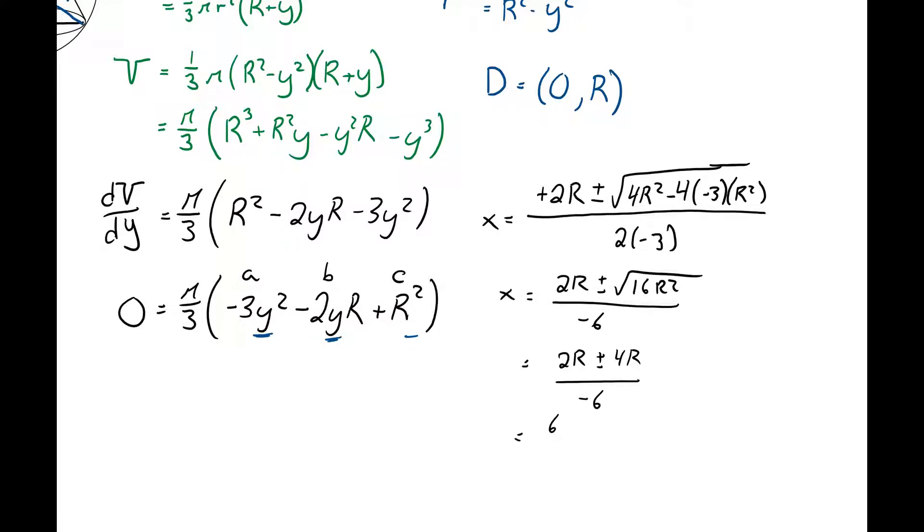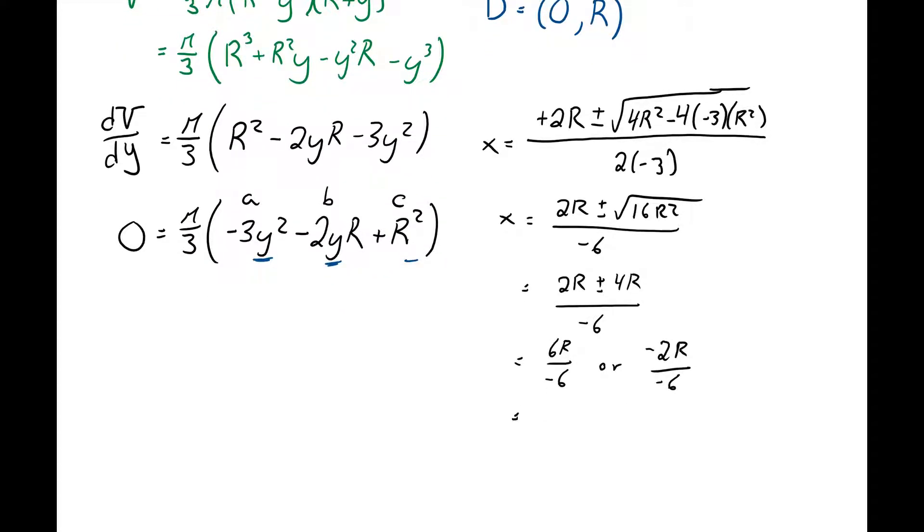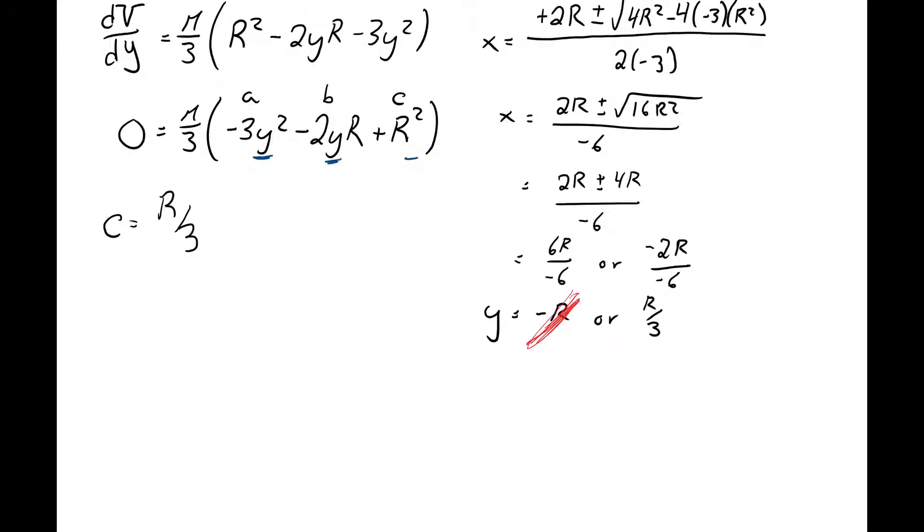So I have 2R plus or minus 4R over negative 6. So on the one hand, I have 6R over negative 6, or 2 minus 4, which is negative 2R over negative 6. Clean this up. I get x equal to, I need no, we're actually in terms of y. So it should be y equals negative R, or R over 3. But as our domain says up here, R has to be between zero, sorry, y has to be between zero and R. Okay, so I have what appears to be my critical number, my critical number at R divided by 3.